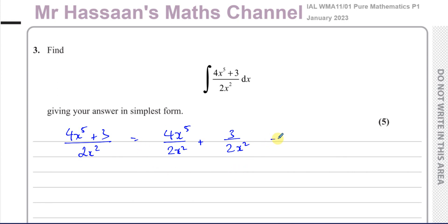And then I'm going to simplify each of these terms. So the 4 and 2 cancel out, leaving you with 2. You have x to the power of 5 divided by x squared. So you have two numbers in index form with the same base, which is x. So you subtract the powers, you have x to the power of 3. We know that x to the power of 5 divided by x to the power of 2 is x to the power of 3. We subtract the powers. So this gives you 2x cubed.